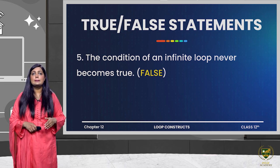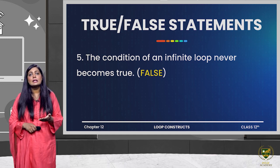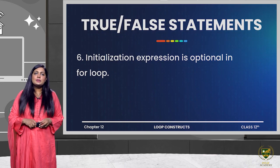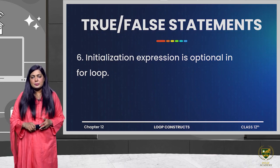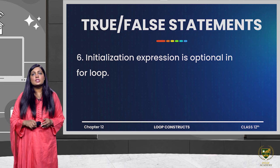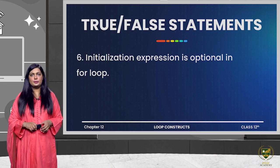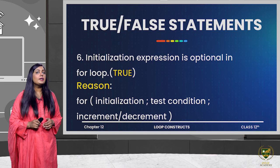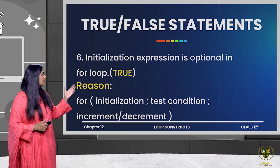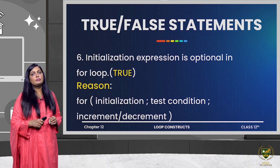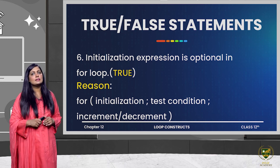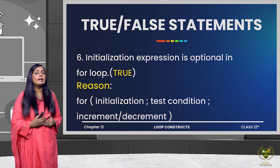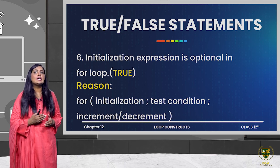The next question: initialization expression is optional in for loop — that is basically true. If you remember the for loop syntax, we have three expressions; the first expression is called the initialization expression.